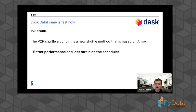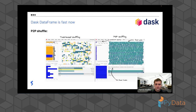We implemented a new shuffle method called P2P shuffle. The two most important features are better performance and less strain on the scheduler. Previously the number of tasks grew exponentially based on the size of your data; now it just grows linearly with the size of your data, which is a really huge improvement for how dask operates in the backend.